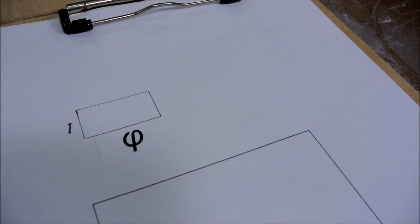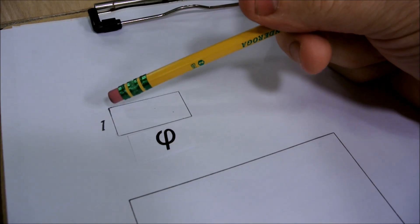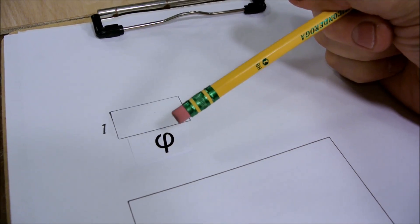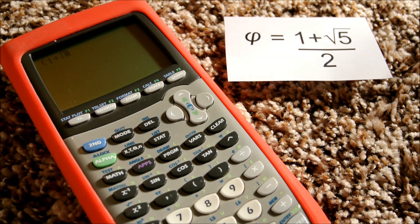So a golden rectangle will have these proportions. If one side is one unit, then the other side is the golden number. Whoa, whoa, whoa, don't worry. The math won't kill you. It's only easy stuff, I promise.